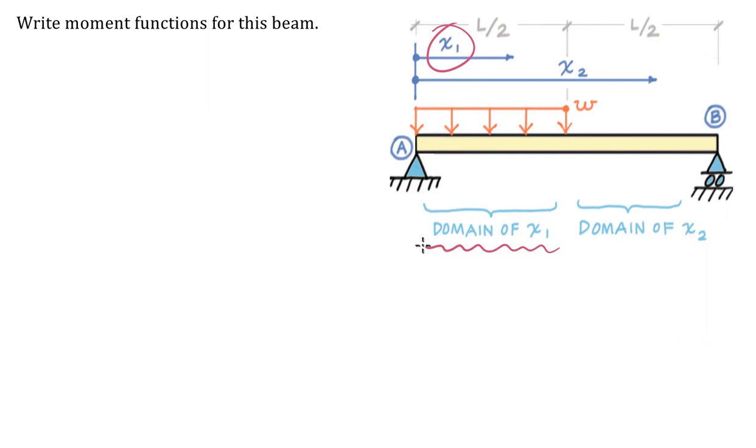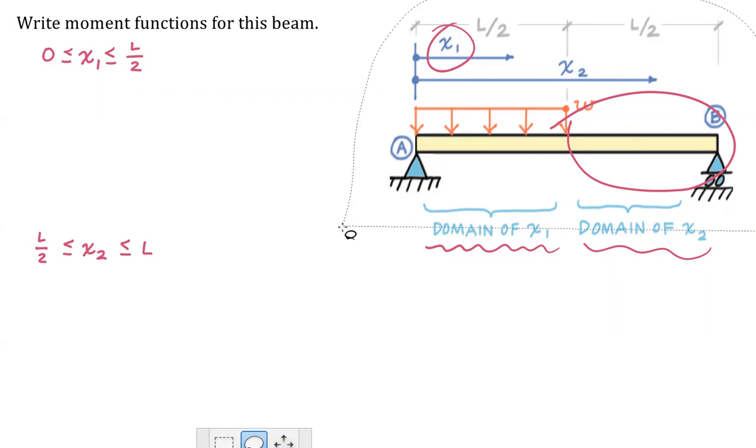So our x1 coordinate system is going to only apply to the left half of the beam, so mathematically we could write that starting at zero and going up to and including L over two. And for the other side of the beam, when we look at the domain of x2, we will set that up to pertain to all of those fibers between L over two and x equals L. So x is going to be our position coordinate for this problem.